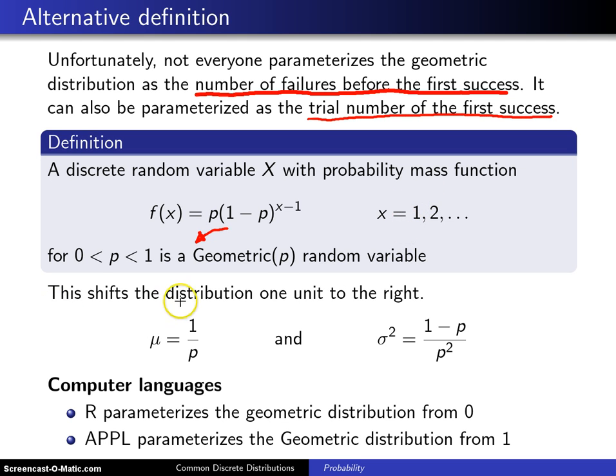Now, what this does is it shifts the distribution one unit to the right. So to find μ, which is the expected value of X, all you have to do is take our previous mean and add 1 to it. And you will get 1 over p as the mean of a geometric random variable which begins its support at 1.